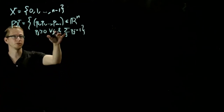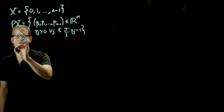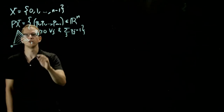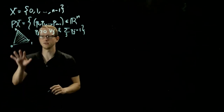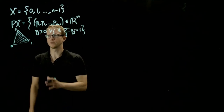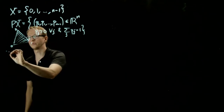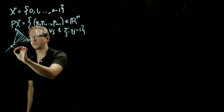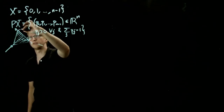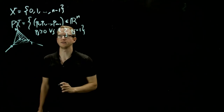What this looks like geometrically as a subset of Rn is exactly an n-simplex whose vertices are given by these points, which we can view as the unit vectors in Rn. This is an example of a 2-simplex, which is what we get when n equals 3. This is a subset of R3, and these points are on the unit vectors in R3. If I drew this as embedded in R3, I would have this line for the x-axis, this line for the y-axis, and this line for the z-axis, with 0 somewhere drawn behind this simplex.